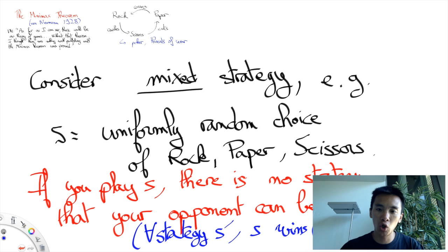And in fact, von Neumann showed that playing uniformly randomly Rock Paper and Scissors was the only strategy with that property. In other words,